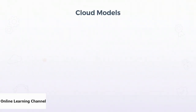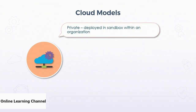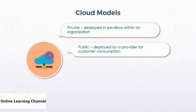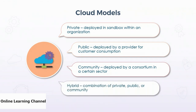On the exam, also be aware of cloud models. A private cloud is deployed in a sandbox within an organization, either at the cloud provider or on-premises. A public cloud is deployed by a provider for customer consumption, typically over the internet. A community cloud is deployed by a consortium in a specific sector — financial, insurance, or healthcare. A hybrid cloud is a combination of private, public, and/or community.